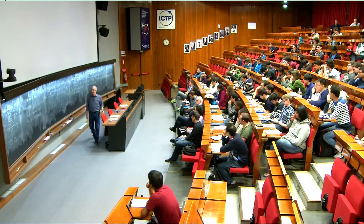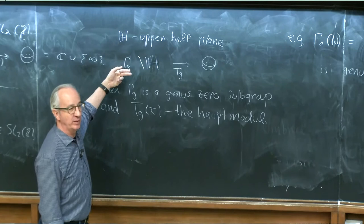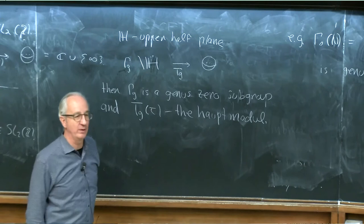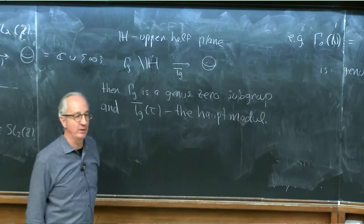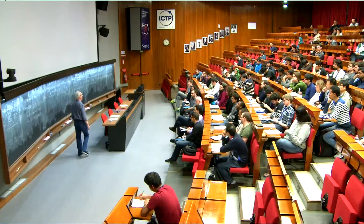If Γ_G is a discrete subgroup of SL(2,R), I can take the quotient of the upper half-plane by this group, and this will define a two-dimensional surface which can have genus 0, 1, 2, 3, etc., depending on the exact form of the group. The particular cases that arise in moonshine are genus zero.